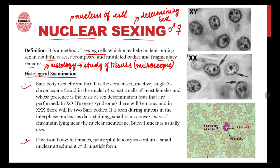Bar body is the condensed, inactive single X chromosome found in the nuclei of somatic cells of most females, and its presence forms the basis of sex determination tests. There are two types of cells — somatic cells and sex cells — and Bar body is found in the nucleus of somatic cells in females only. It is a characteristic feature of females.